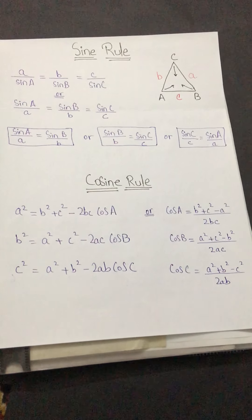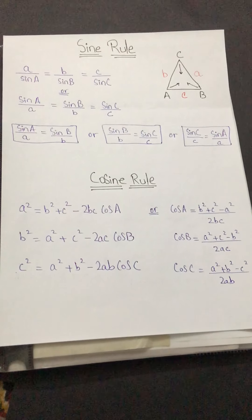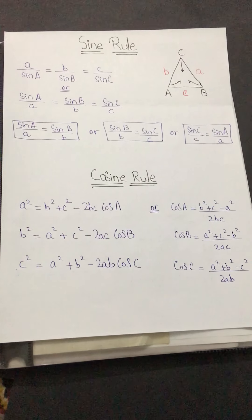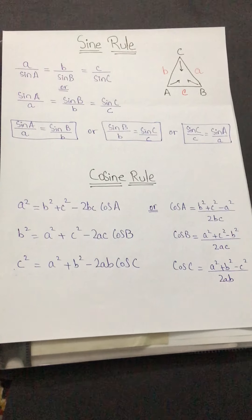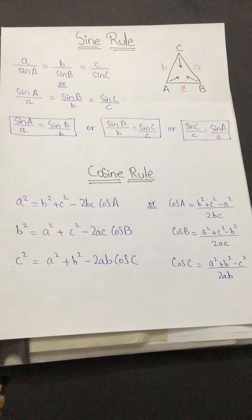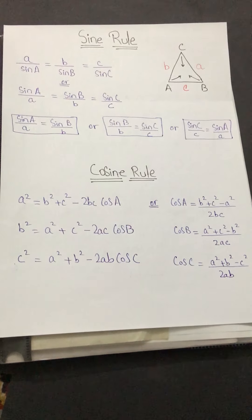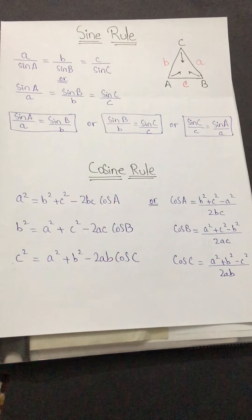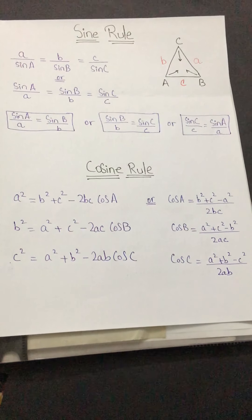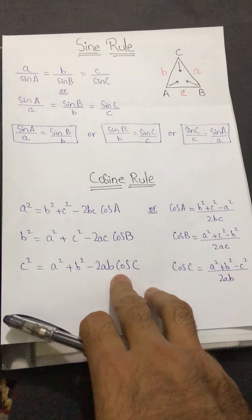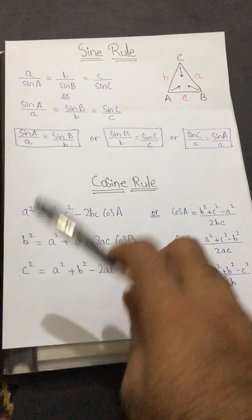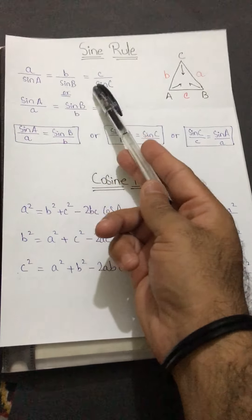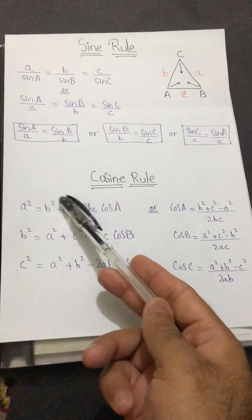After Pythagoras theorem and trigonometric ratios, we have sine rule and cosine rule. We can use these two rules to find the missing sides and angles of both right angle and non-right angle triangles, but we mainly use them for non-right angle triangles. Sine rule has only sine in it, and cosine rule, as the name suggests, has only cosine in it.